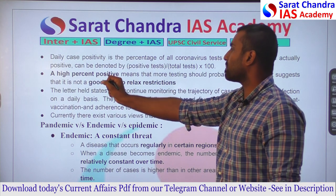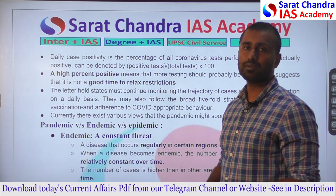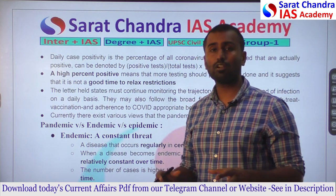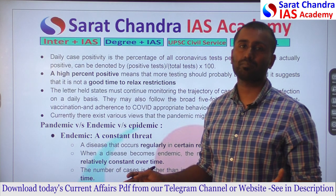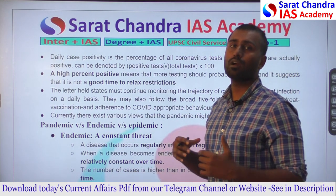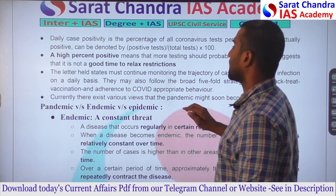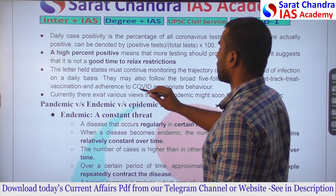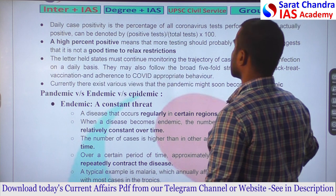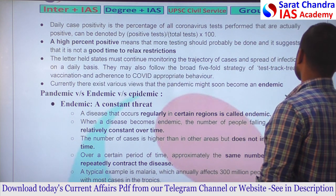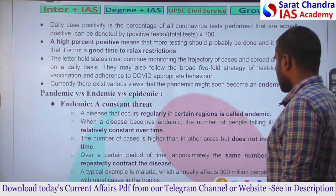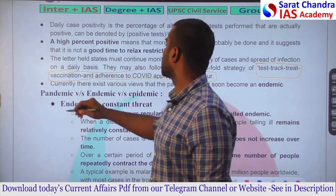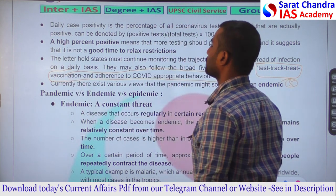If the daily case positivity rate is very high — say 25% — it means many people are infected and testing should be increased rather than decreased. The letter to states held that they must continue monitoring case trajectory daily and follow the broad five-fold strategy: testing, tracking, treating, vaccination, and adherence to COVID-appropriate behavior.